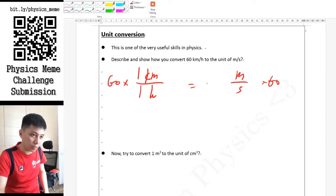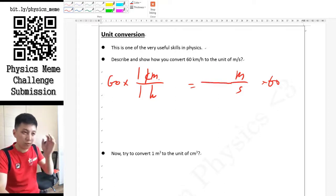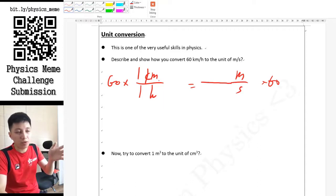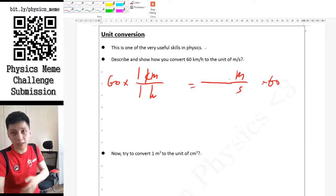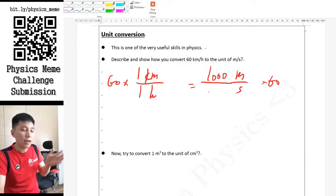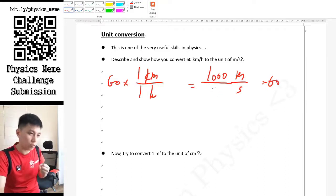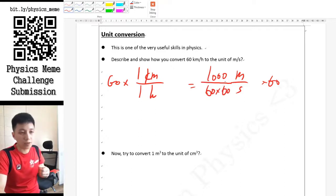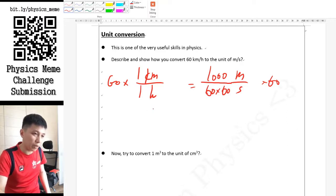The first thing you may want to work out is in this fraction, how much 1 km converts into meters. Obviously from what you learn, the answer is 1000. Similarly, for one hour, how many seconds it can convert into - I suppose you know in one hour there are 60 minutes and each minute got 60 seconds, so it will be 60 times 60.